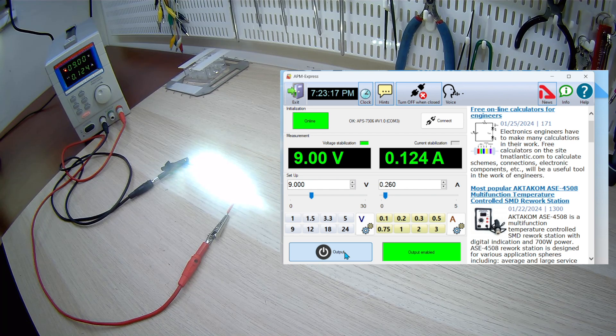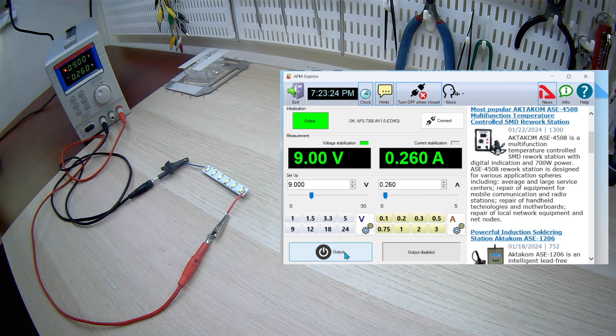Turn on the output of the power supply and see that the strip is working. Thus, we successfully repaired the LED strip. Output disabled.